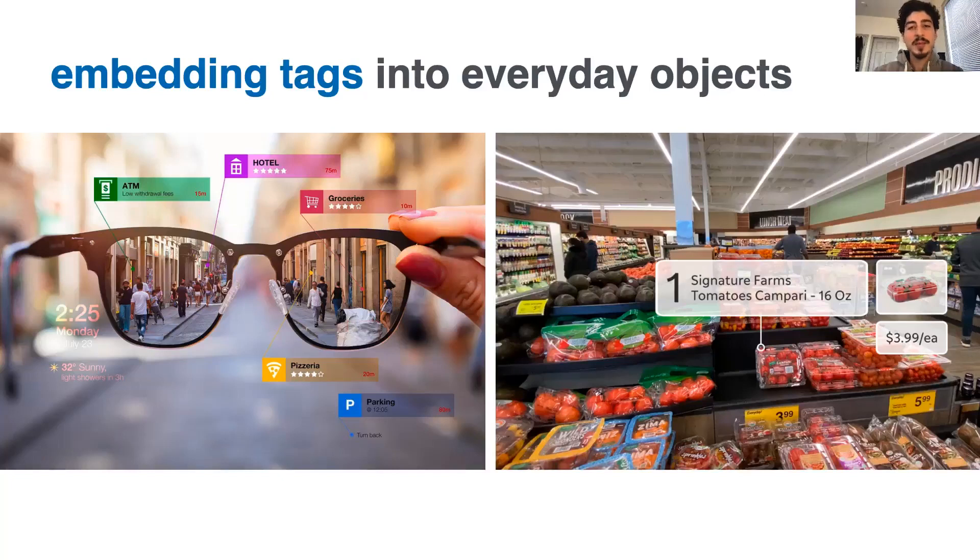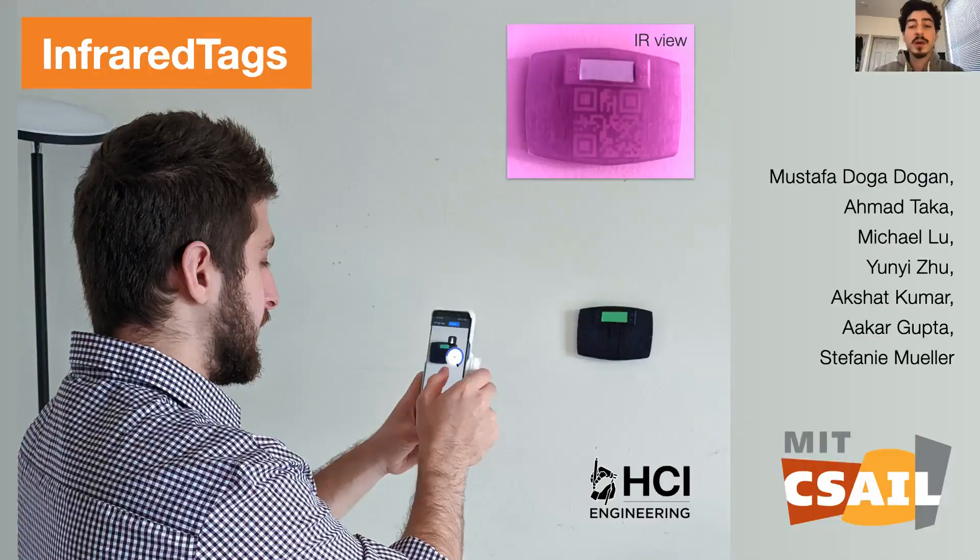Let's conclude. At the beginning, I told you about my vision of embedding unobtrusive tags into everyday objects. With infrared tags, we create markers that are invisible and that can be detected using low-cost tools. Thank you so much for your interest.